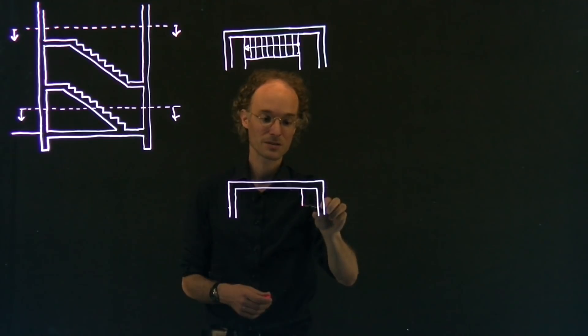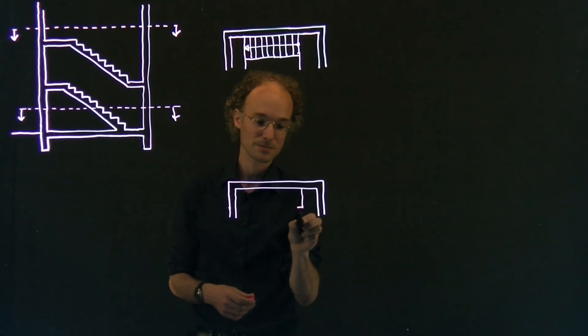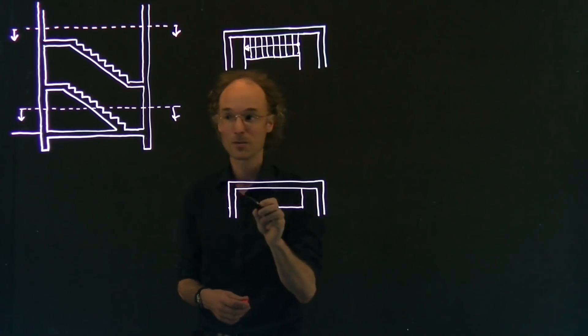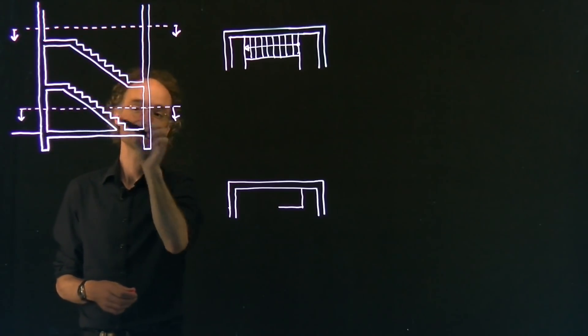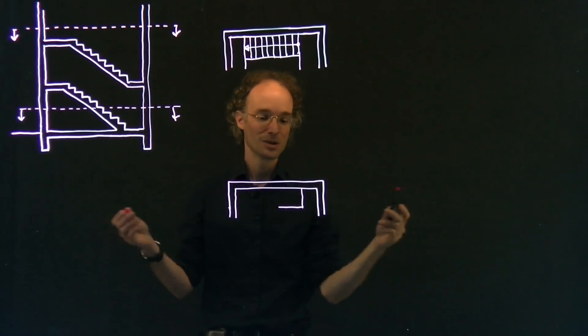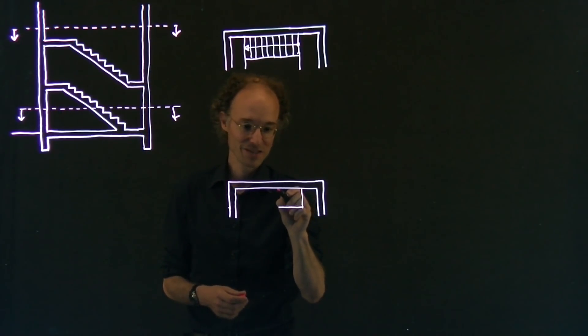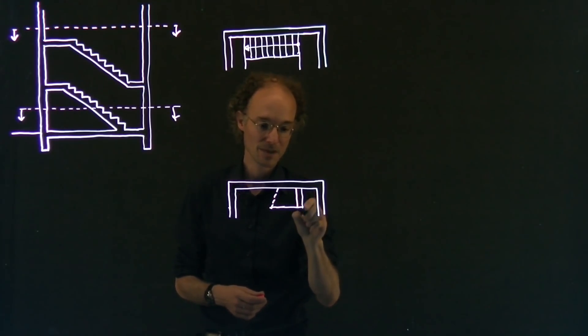Let's see, the stair starts here and it goes up. But the section, you see that the section cuts the stair more or less here, more or less halfway. And again, the convention is to stop the stair with a diagonal dashed line. I draw the steps I see.